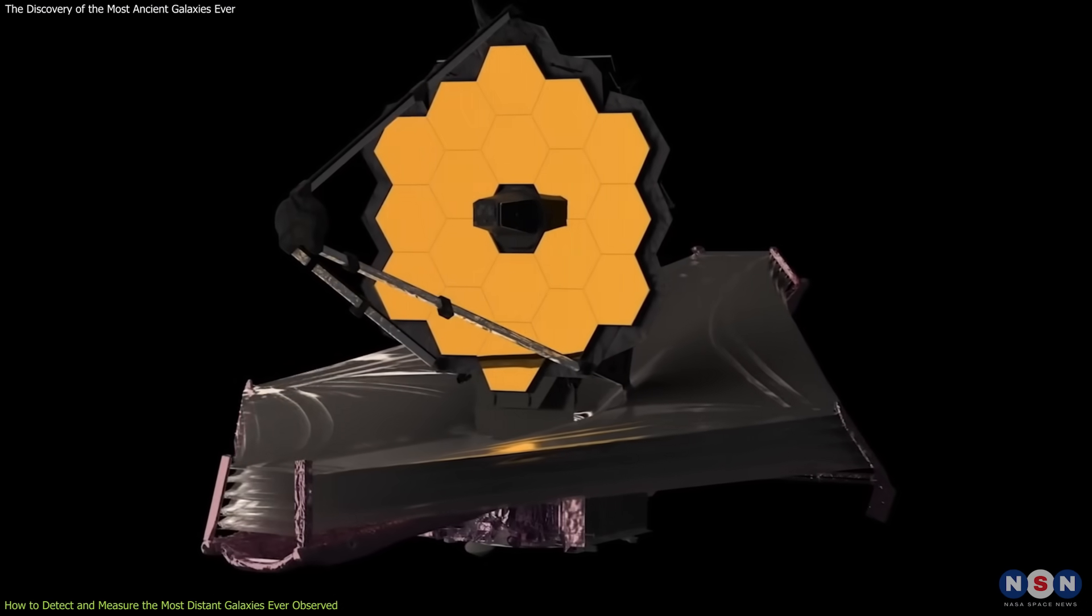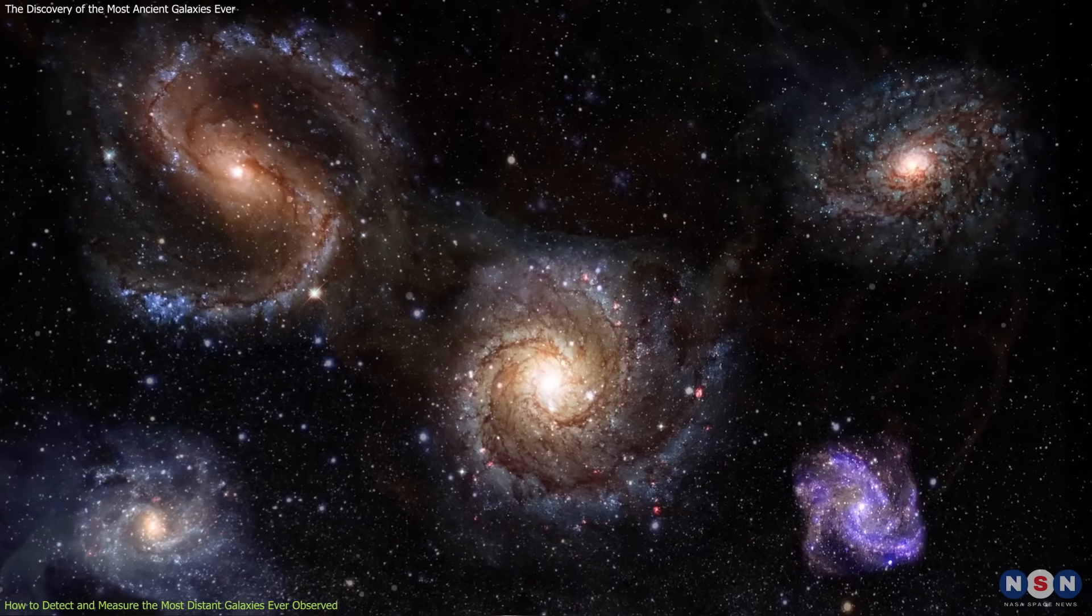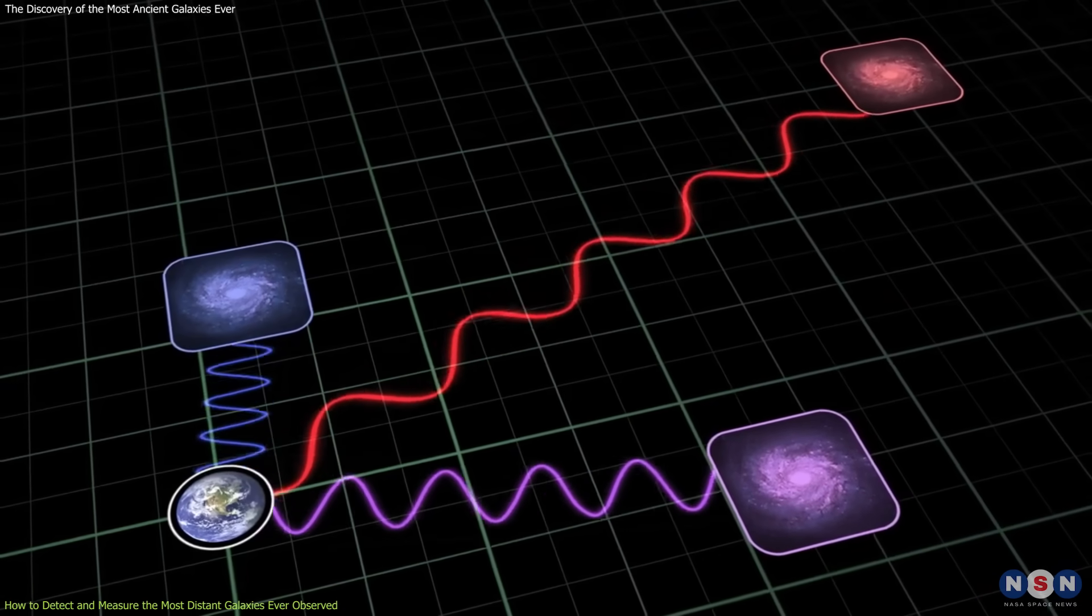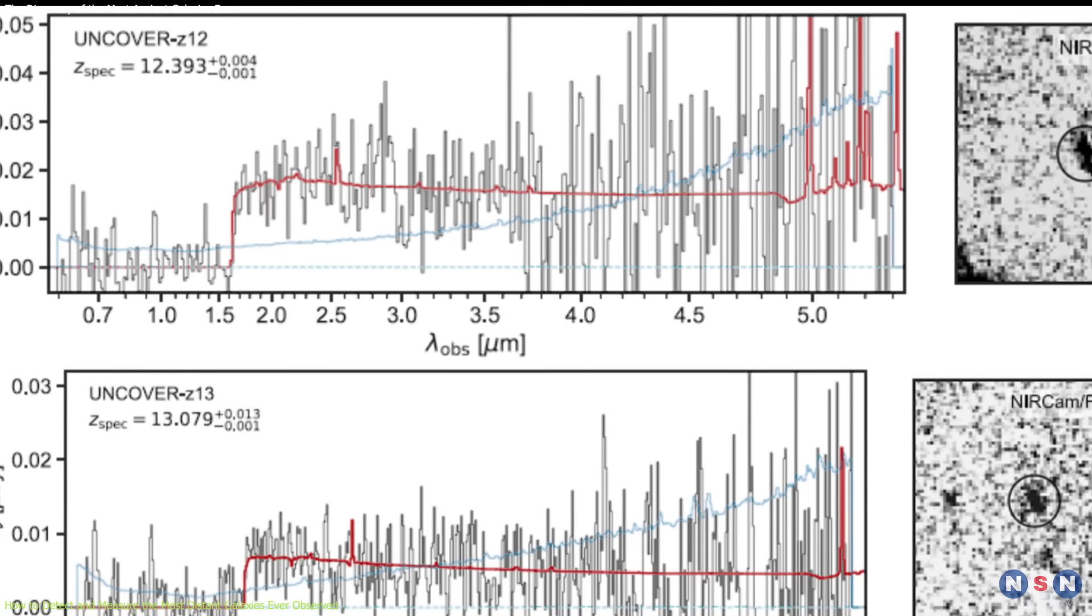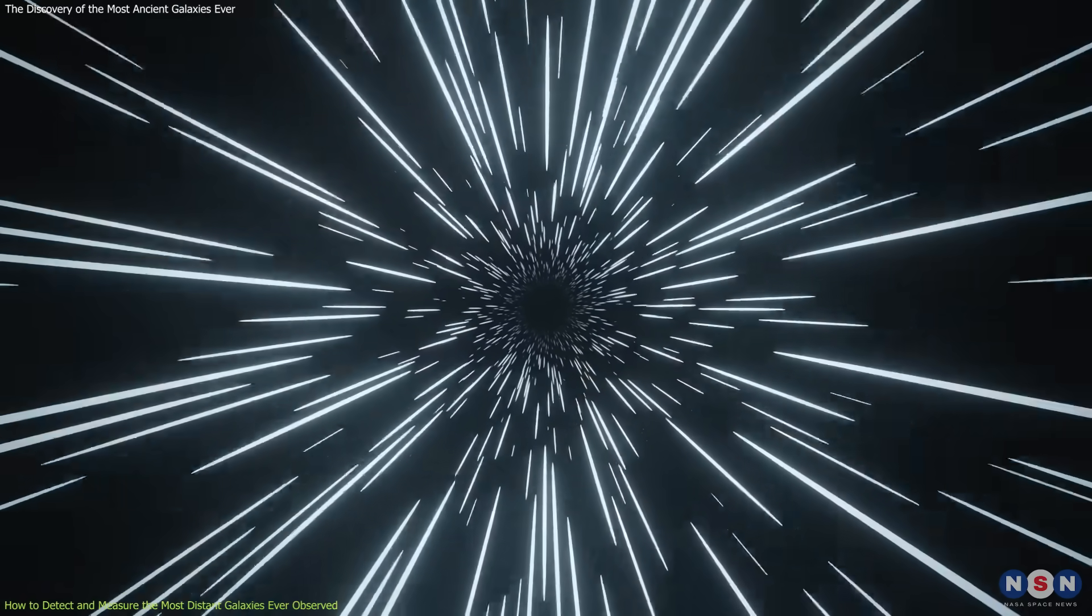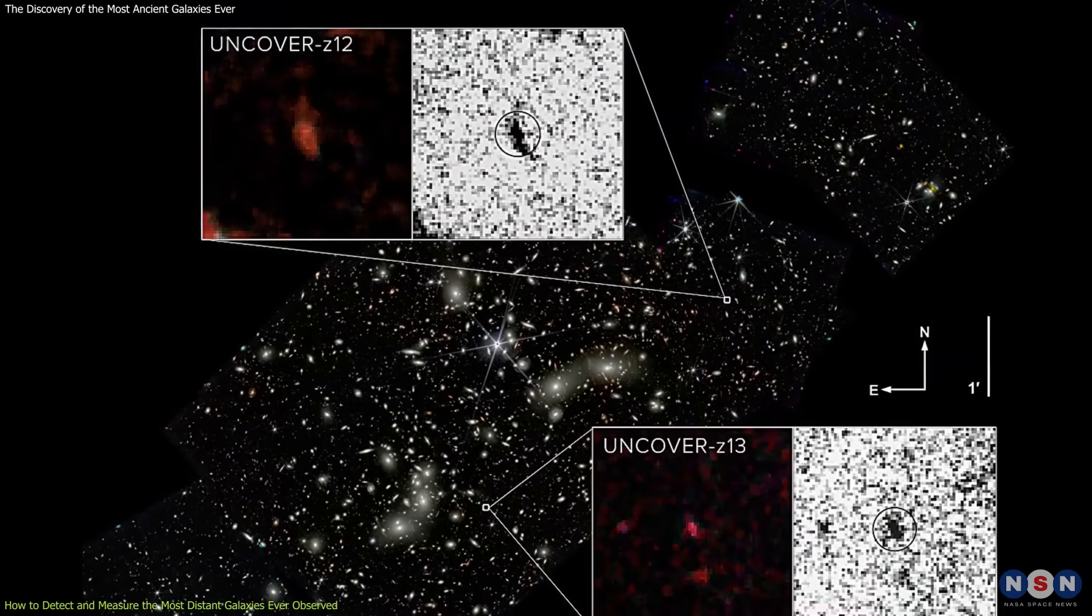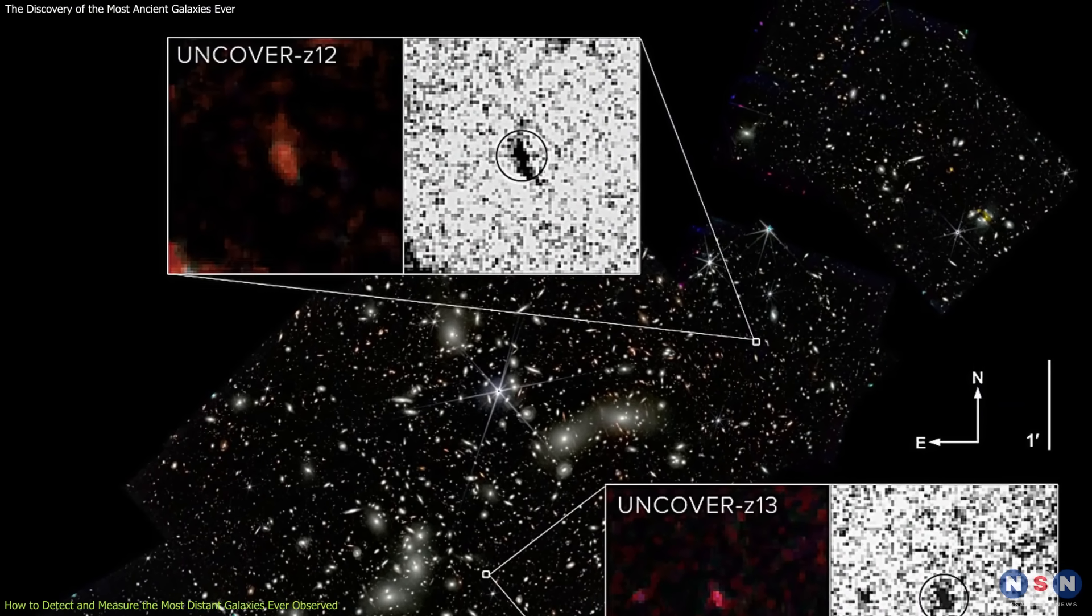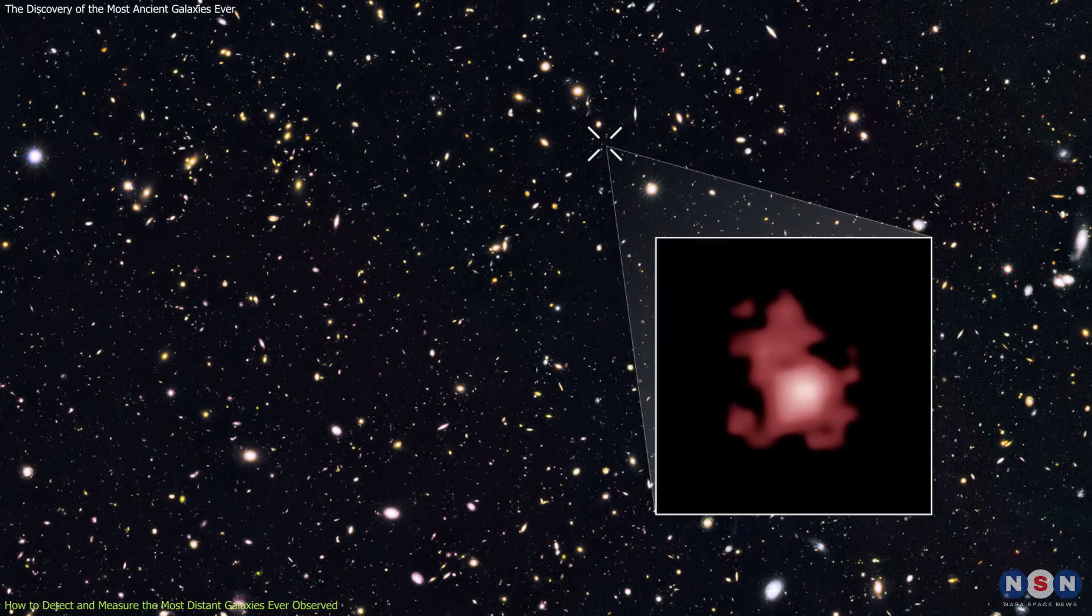The second step was to use the spectroscopic mode of the James Webb, which splits the light into its different wavelengths, revealing the chemical composition, temperature, and redshift of the galaxies. The researchers found that the two galaxies have very high redshifts of 10.8 and 10.2, respectively, which means that they are located at about 13.4 and 13.3 billion light-years from Earth, and that they formed when the universe was only about 400 million years old. These are the second most and fourth most distant galaxies ever observed, only surpassed by a galaxy with a redshift of 11.1, which was discovered recently.